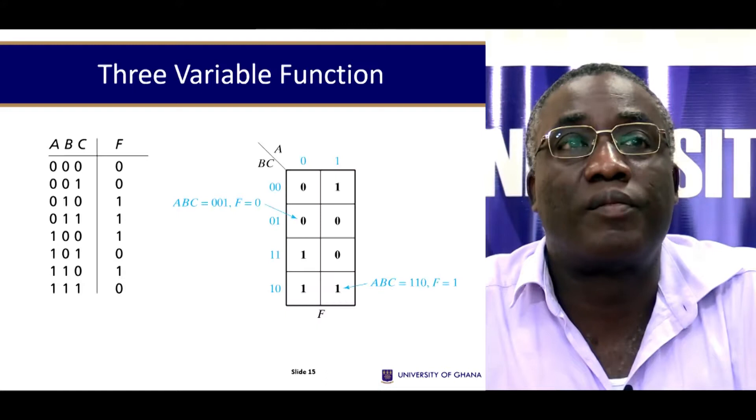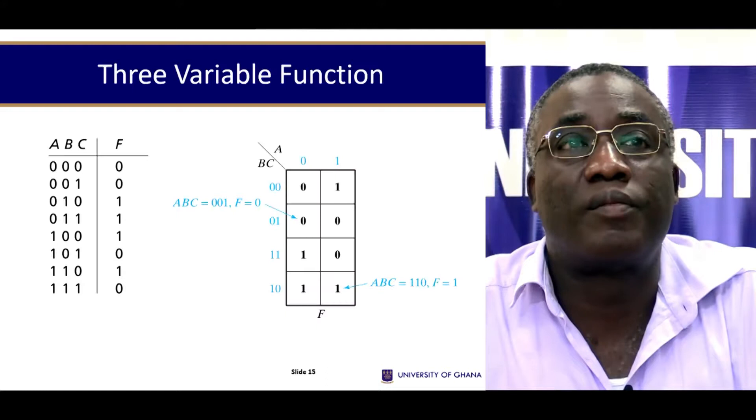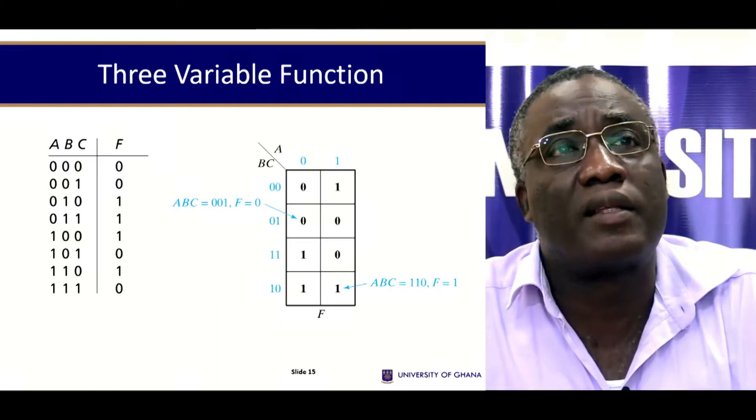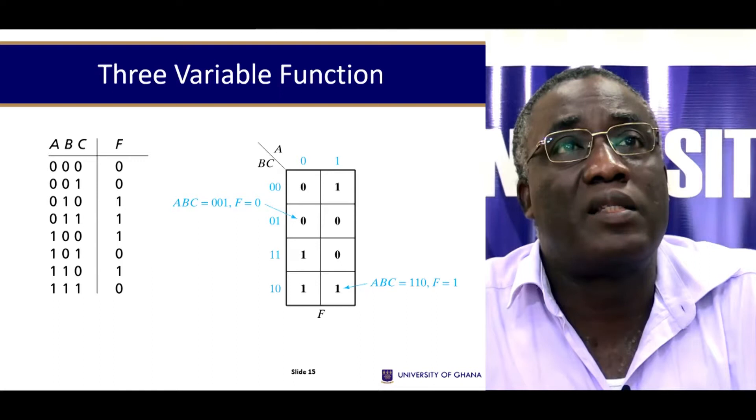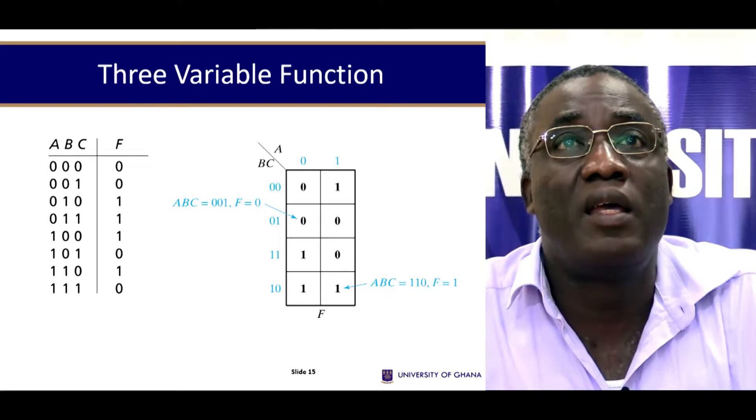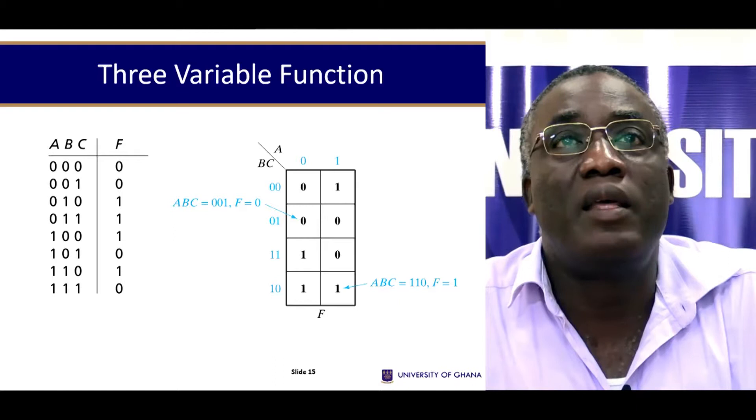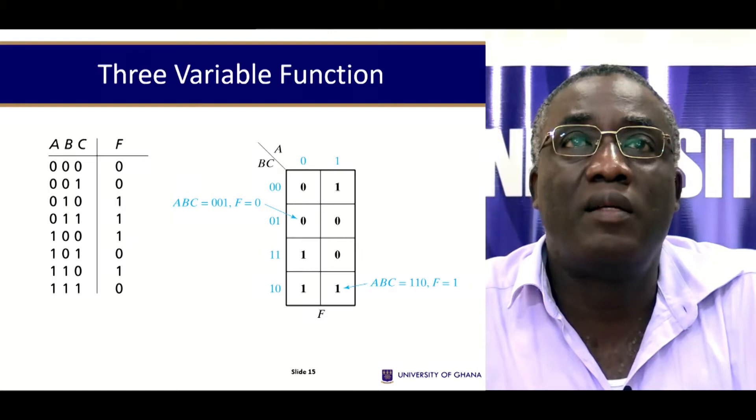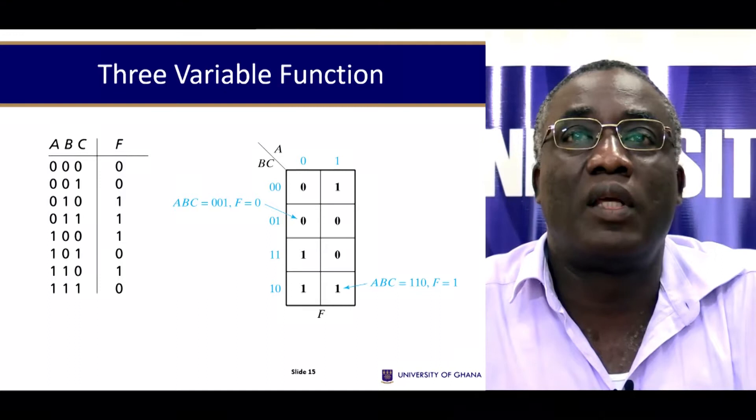Now three-variable functions. Let's say you're given a truth table like this which looks like that. There are one, two, three, four ones in the output. So you represent them on the K-map. So you've got A and then BC. So A is zero, one, and then BC is zero zero, B is zero C is zero, zero one, B is zero C is one, one one, and then one zero.